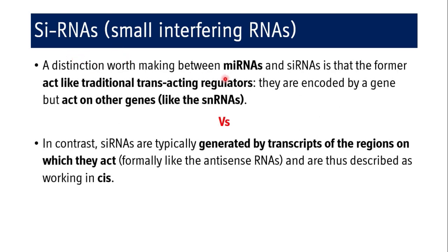The distinction worth making between miRNA and siRNA is that miRNA acts like a traditional trans-acting regulator — encoded by a gene but acting on other genes. In contrast, siRNAs are typically generated by transcripts of the region on which they act — the same gene producing mRNA also produces siRNA. So they are like antisense RNAs, described as working in cis rather than trans. Trans is miRNA and siRNA is cis.